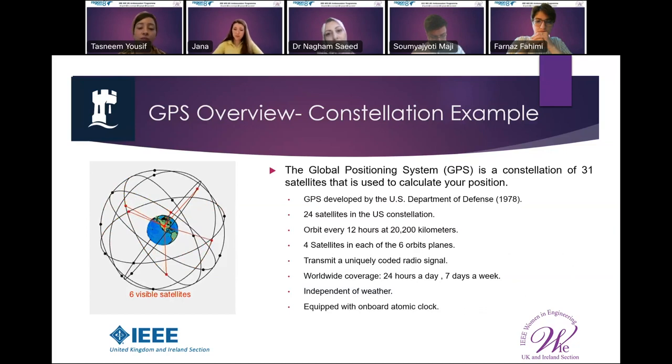GPS stands for Global Positioning System that provides location and time information in all weather conditions anywhere on Earth. Created by the United States Department of Defense, it was meant to be for military application only. However, nowadays it's used for many civilian applications. It has 24 satellites in the US constellation and four satellites in each of the six orbit planes.